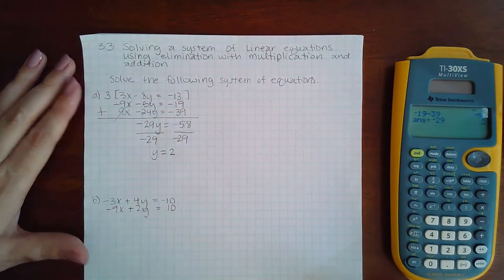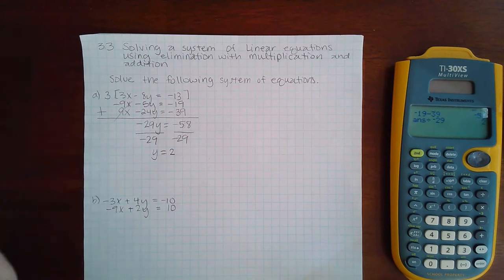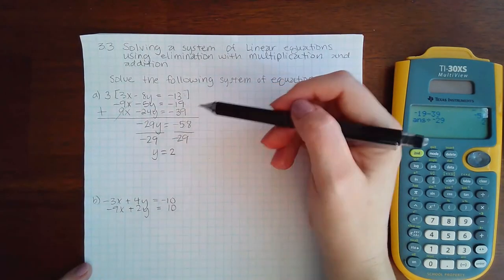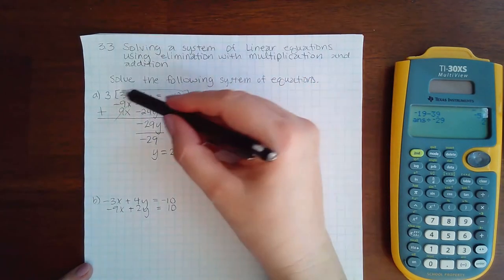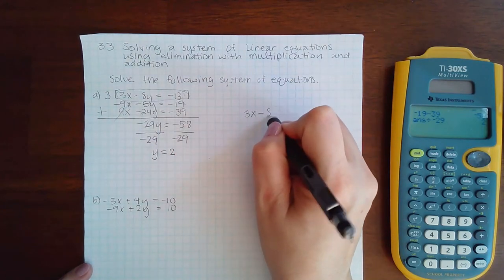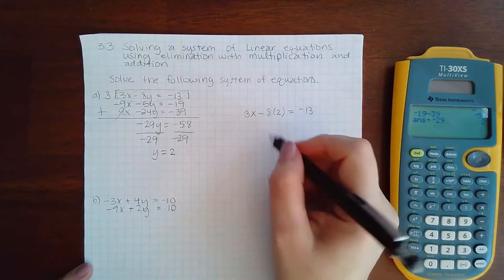Sometimes you end up with fraction answers, but it's always good to double check to make sure that it is in fact going to be a fraction answer, and this one turns out it's not. So then I can plug 2 into either one of the original equations. I'm going to use the top one, what's inside the brackets, so I'm going to say 3x minus 8 times the 2 I found for y equal to negative 13.